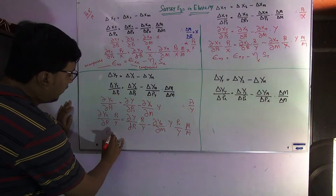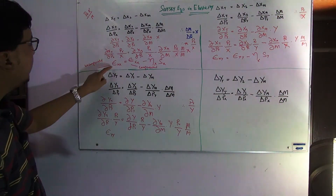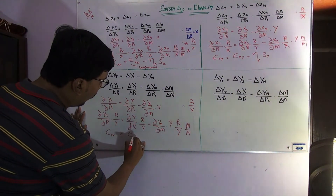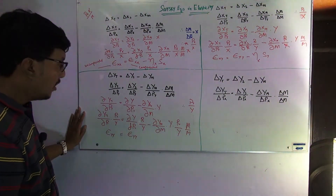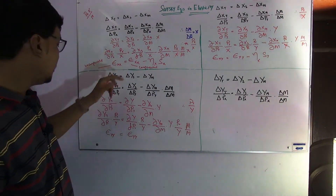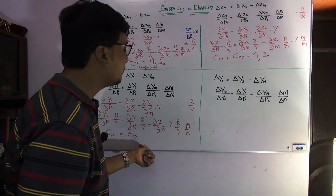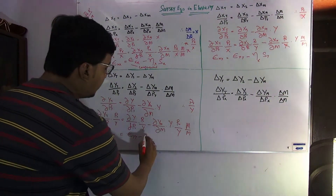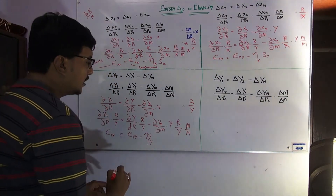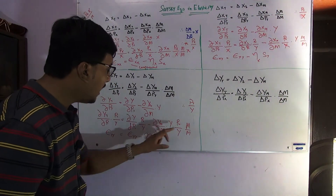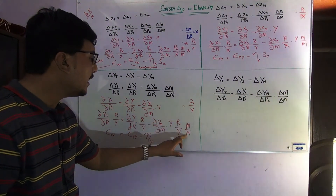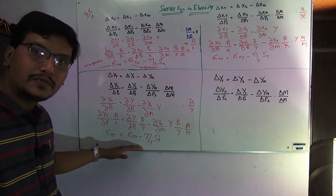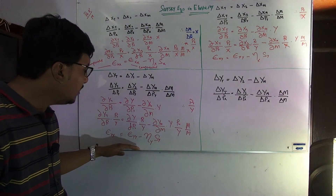We have Eyy — the own price elasticity of commodity Y. The uncompensated version is the total effect and the compensated version comes from the Hicksian demand curve. The income elasticity of Y also appears. The remaining terms PY·Y over M represent the budget share of Y. This is the third Slutsky equation in elasticity form.